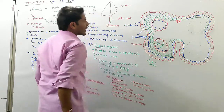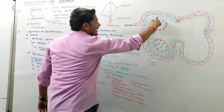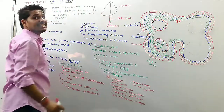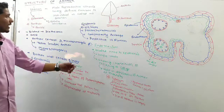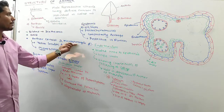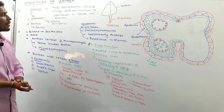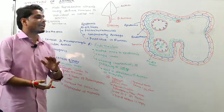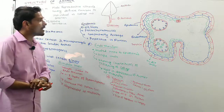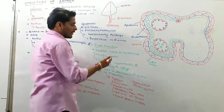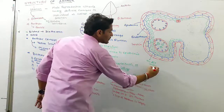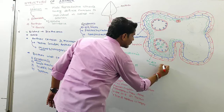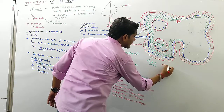This entire structure is called a pollen sac, also known as microsporangia.